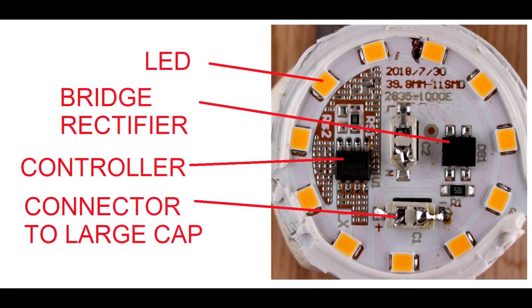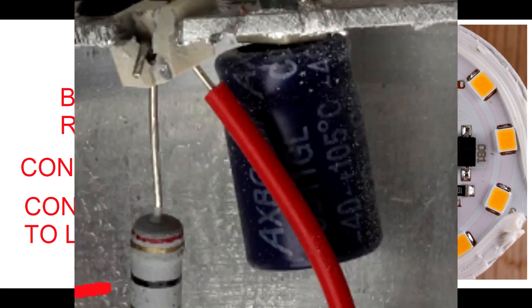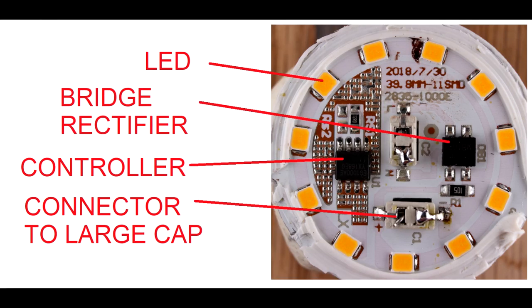In this picture here we take a look at the actual circuit board. A model of cost effective design. Eleven LEDs, one bridge rectifier, two resistors and a controller IC. And that's it. There's a connector on the board which allows an electrolytic capacitor to be installed in the back of the assembly. And that's the entire component count which is really impressive.